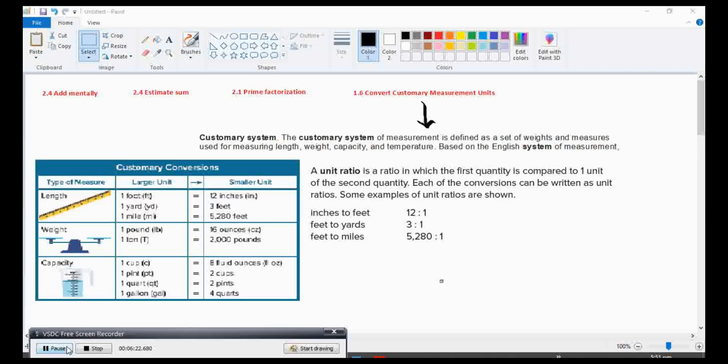Hello, grade 6. Today, we will discuss convert customary measurement units. The customary system of measurement is defined as a set of weights and measures used for measuring length, weight, capacity, and temperature. Based on the English system of measurement, a unit ratio is a ratio in which the first quantity is compared to one unit of the second quantity. Each of the conversions can be written as unit ratios. Some examples of unit ratios are shown.